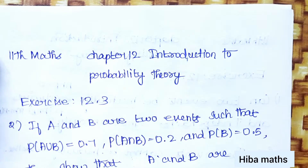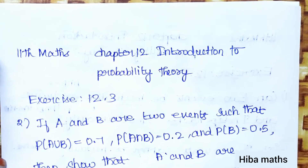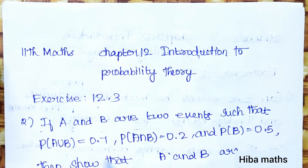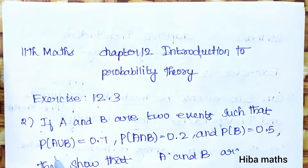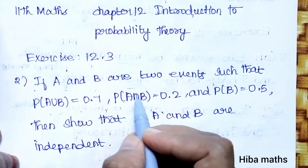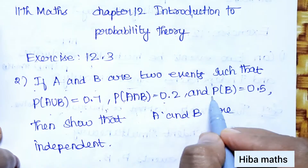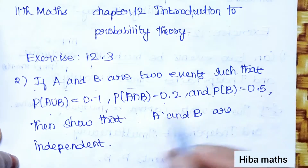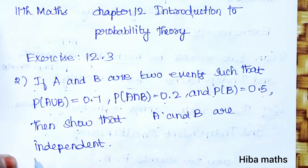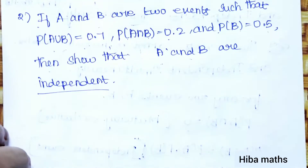Hello students, welcome to Hiva Max 11th Standard, Chapter 12 Introduction to Probability Theory, Exercise 12.3, second question. If A and B are two events such that P(A∪B) = 0.7, P(A∩B) = 0.2, P(B) = 0.5, then show that A and B are independent.